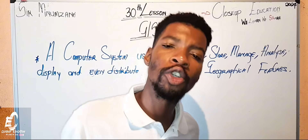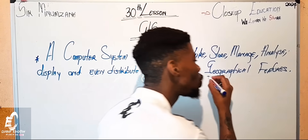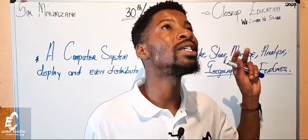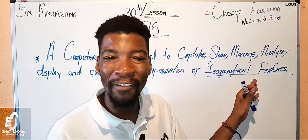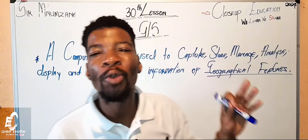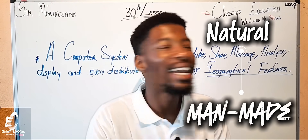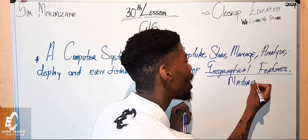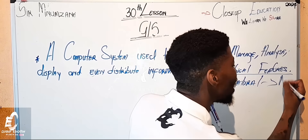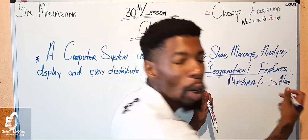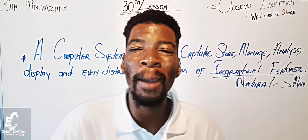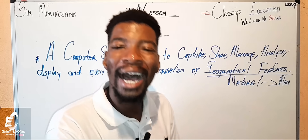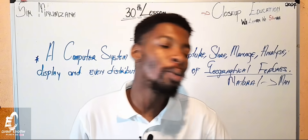When we speak about geographical features, what comes to mind? You might be thinking about mountains and things like that, but in GIS, geographical features can be either natural or man-made. They can be natural, or they can be man-made. Please make sure you are taking notes, because when it comes to GIS it's all about information — everything connects to one another.